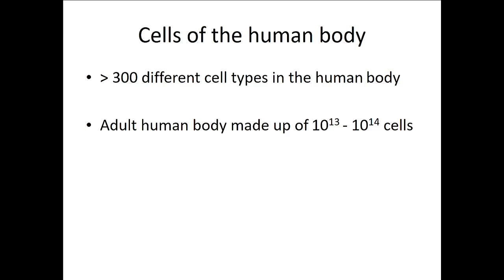You can think for example of cells in your eyes, the cells that give rise to hair, your skin cells, your intestinal cells, the cells in your heart, they're all different. And our adult human body is made up of very many cells, as you can see here, from 10 to the power of 13 to 10 to the power of 14.